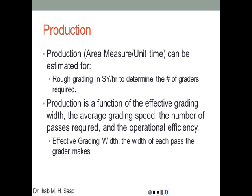Production is measured in area per unit of time — usually square yards per hour. Remember, most pieces of equipment we've dealt with before had production measured in cubic yards per hour, so volume per hour. In this case it's slightly different: it's going to be an area per hour.